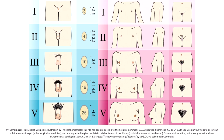Here we see the different Tanner stages. In stage 1, there is no pubic hair either in boys or girls, and girls have a flat chest with raised nipples. In stage 2, pubic hair starts to develop, breast development starts in girls, and testicular enlargement occurs in boys.